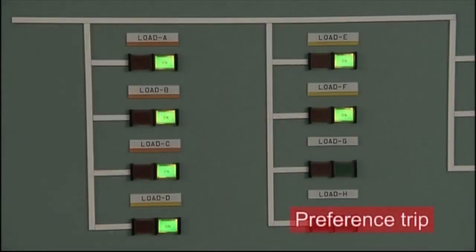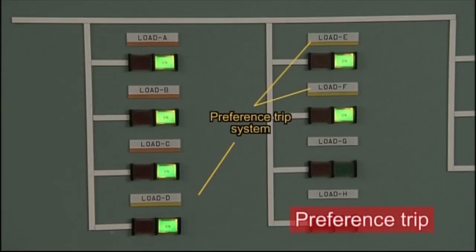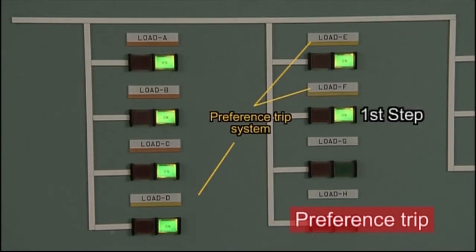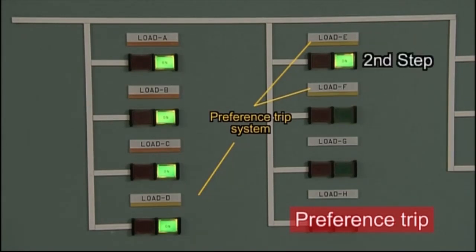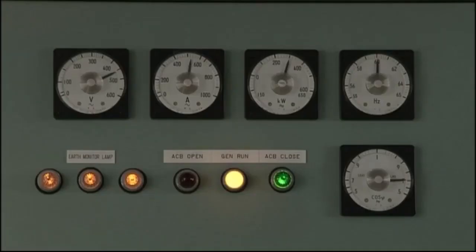Now let's consider a preference trip. When the generator becomes overloaded, the preference trip is activated and preferentially feeds power to important equipment by shutting off power to less important equipment. During a preference trip, power continues to be fed to the main systems.